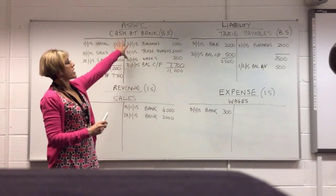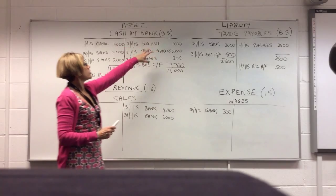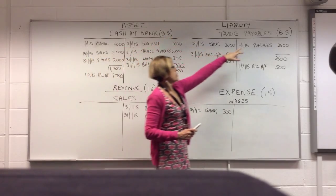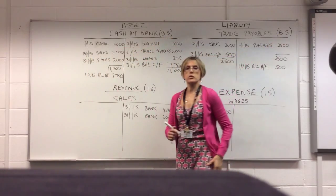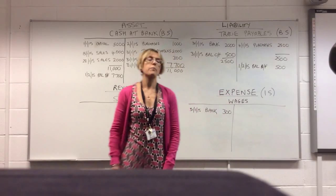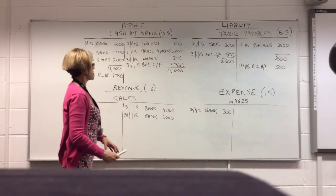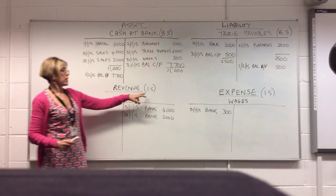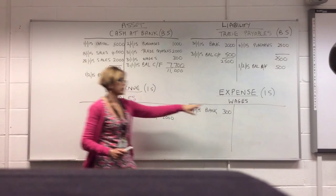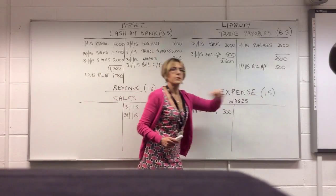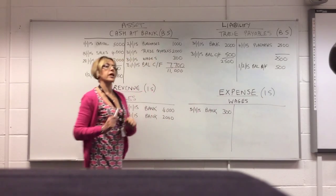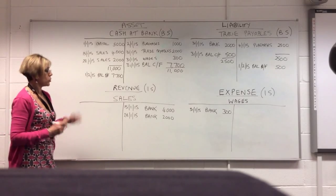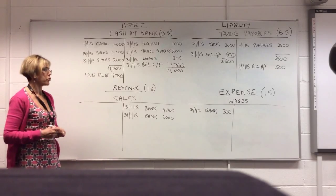That deals with our assets and liabilities. You'll see I've written BS — that stands for balance sheet. Those are our balance sheet accounts. Now we have to deal with revenue and expenses, and I've written IS, because these are accounts which are going to end up in our income statement, or statement of profit or loss.